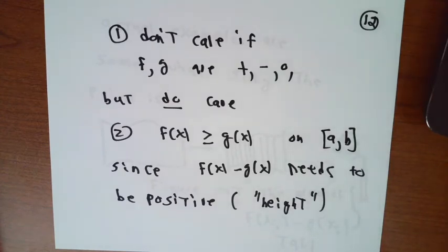So as we said, we no longer care if the f and g functions are positive or negative or zero. It is irrelevant to us. I do care that one of them is above the other one, so that f of x minus g of x here will be positive. Heights are positive. They're never negative.